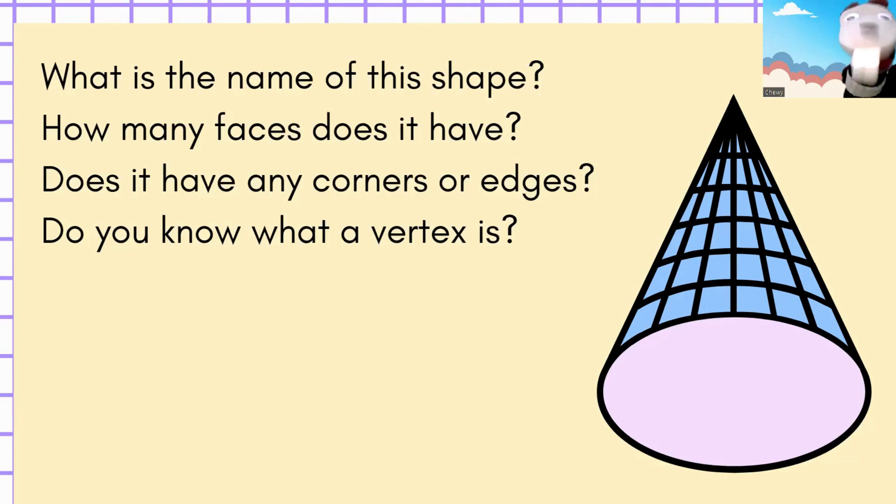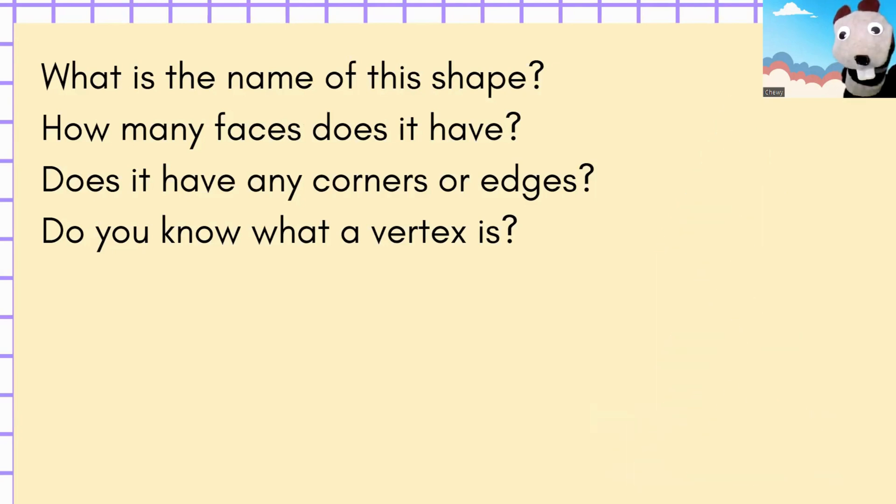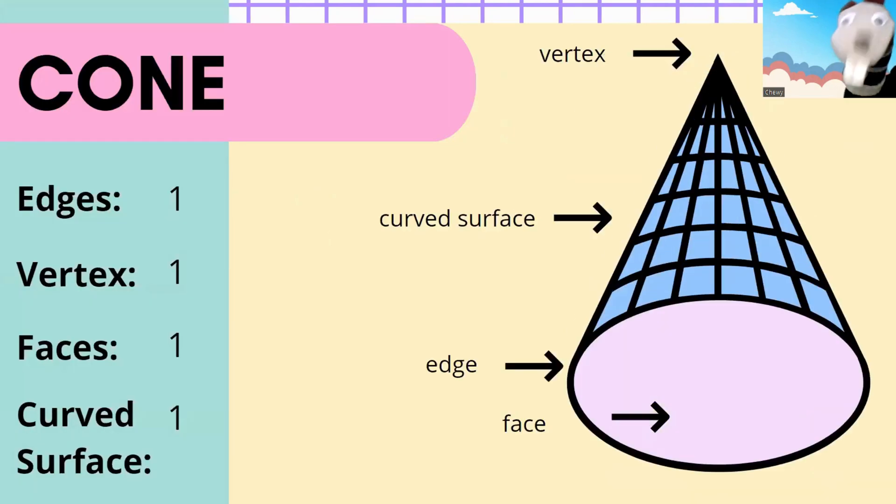Well, let's find out! If you said this was a cone, you are right! It has one edge, one vertex, one vertex at the top, one face, and it has a curved surface.